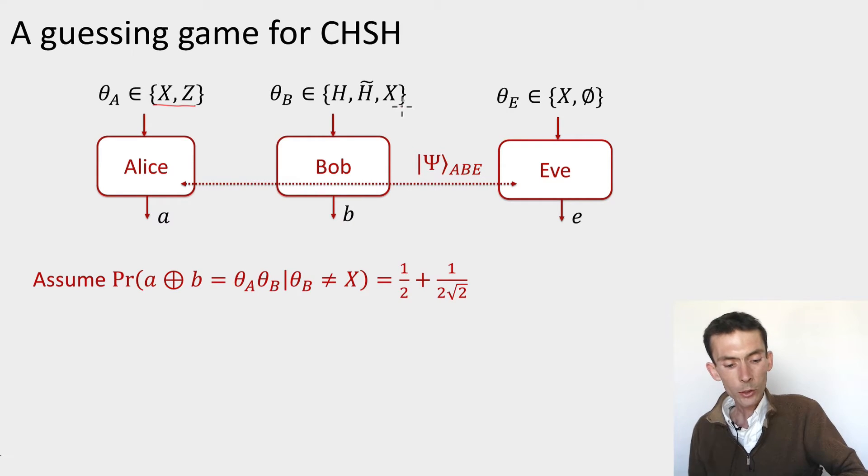Bob has three possible inputs: h, h tilde, and x. And Eve just gets one possible input. So here I wrote an empty set, but really what I want to say is that she has a single possible input, x.